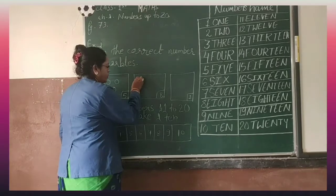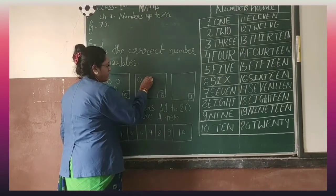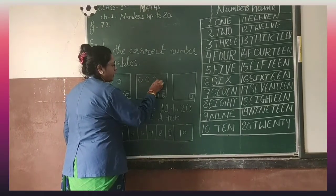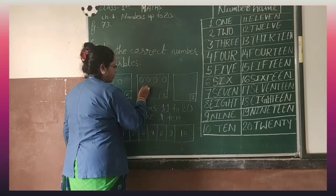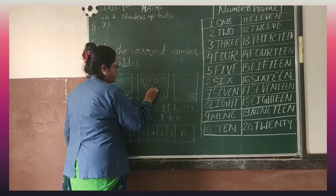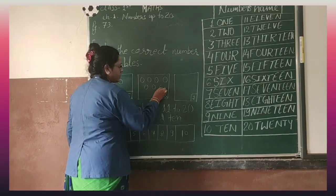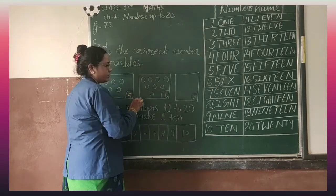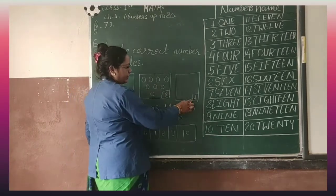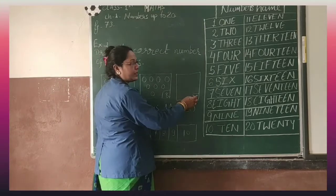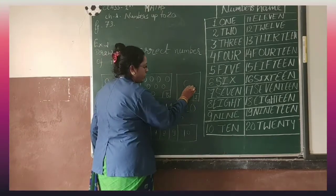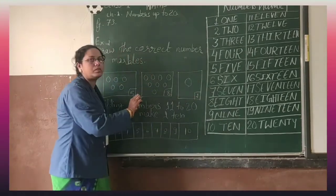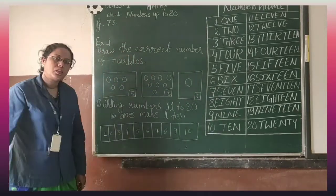Next is 8. Draw it: 1, 2, 3, 4, 5, 6, 7, 8. Here: 1. Draw it — 1 marble. Alright.